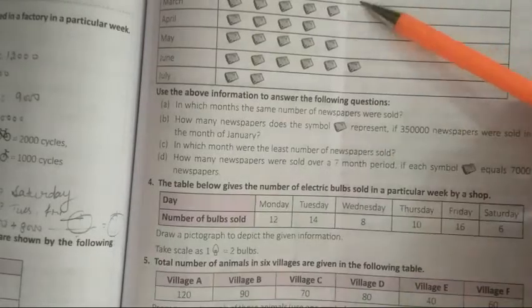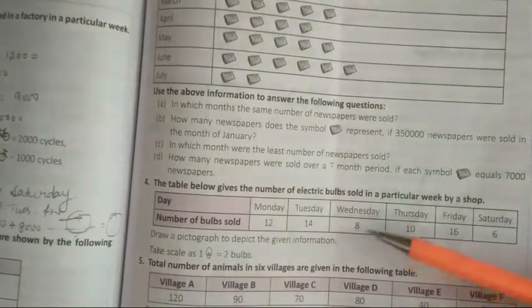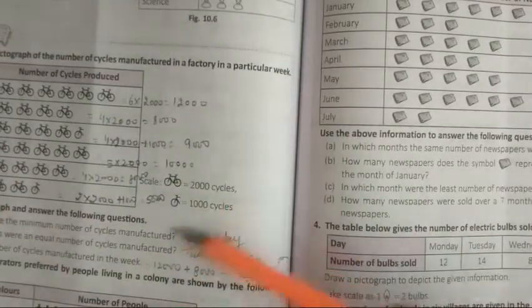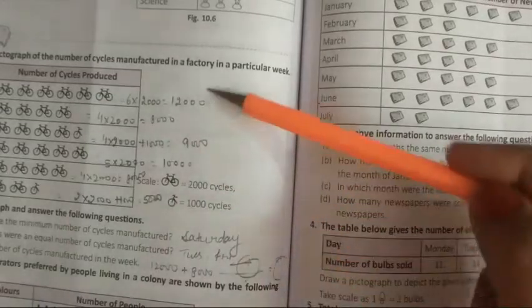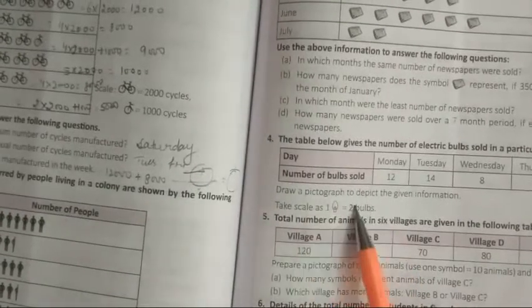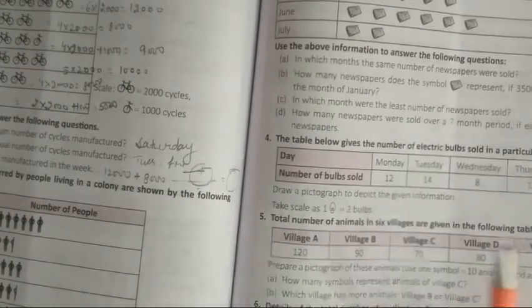Student, jaise hum ne ye pictograph kiye the, jahan pe, hame ye statement bana ke de di hai, jo hum data baad me find kar rhe the, jo data hum, yahan se find kar rhe the, toh je data hume de rakha hai, toh hum fourth sum me, hume is tarah se pictures banani hai, jo jo ne bulb ko represent kar rakha, is tarah se, toh hume is tarah se bulb banani hai.